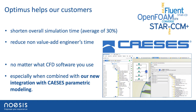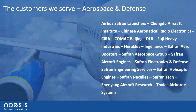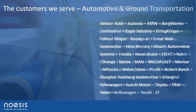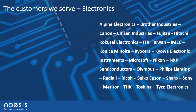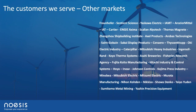Today we'll be showing CASIS parametric modeling. The next slides give a quick overview of some of our customers by industry segment: aerospace and defense, automotive and ground transportation, electronics and consumer products, and a cross-section of other industries — customers of Noesis Solutions and users of Optimus.